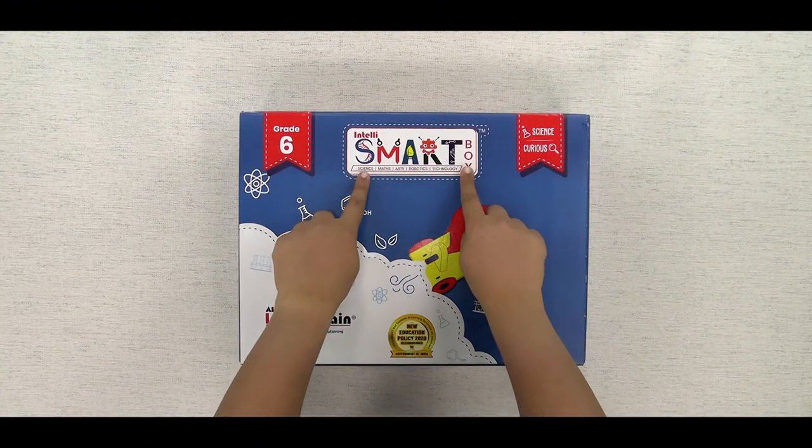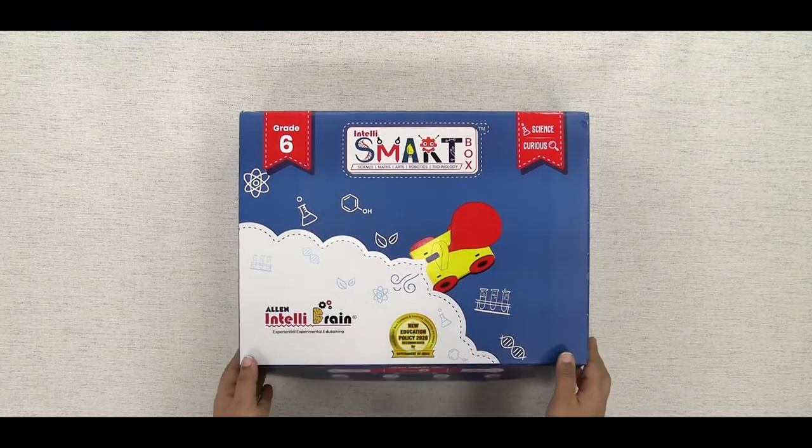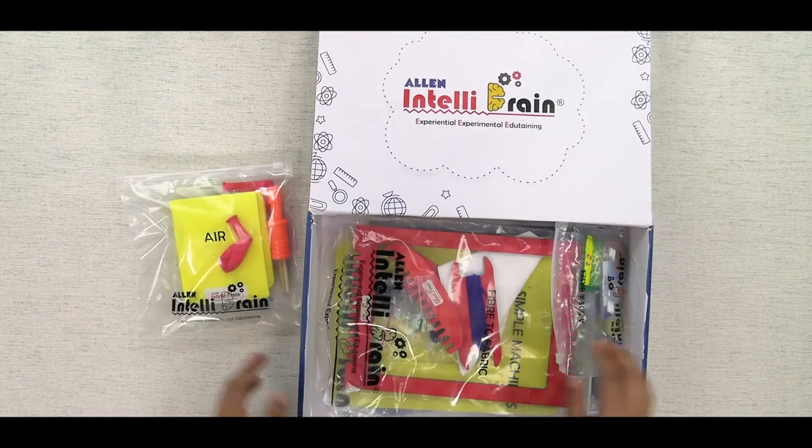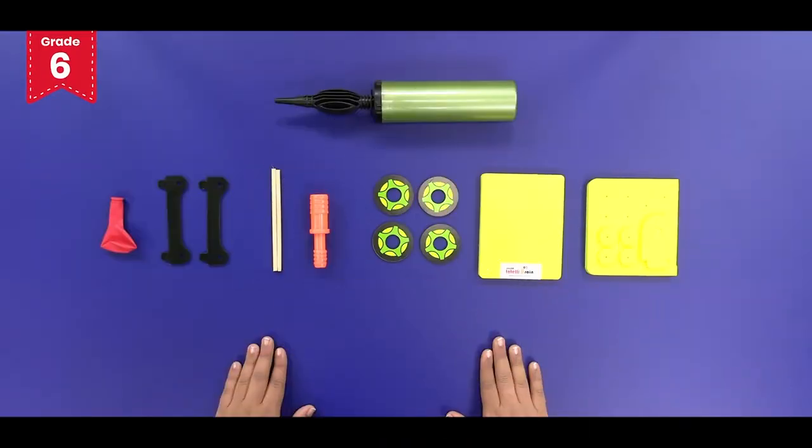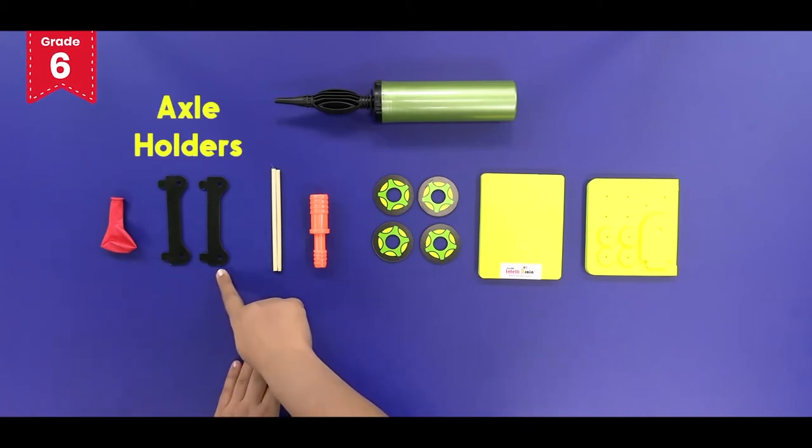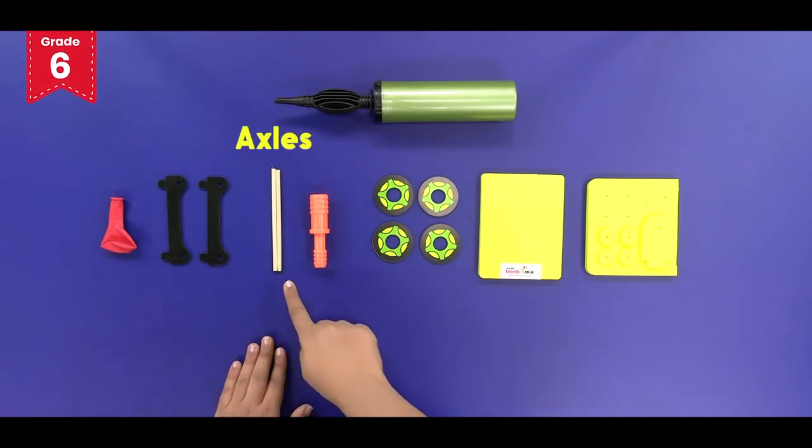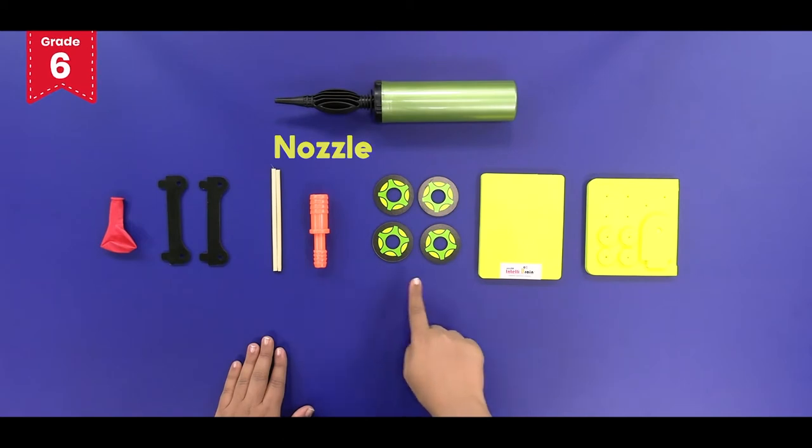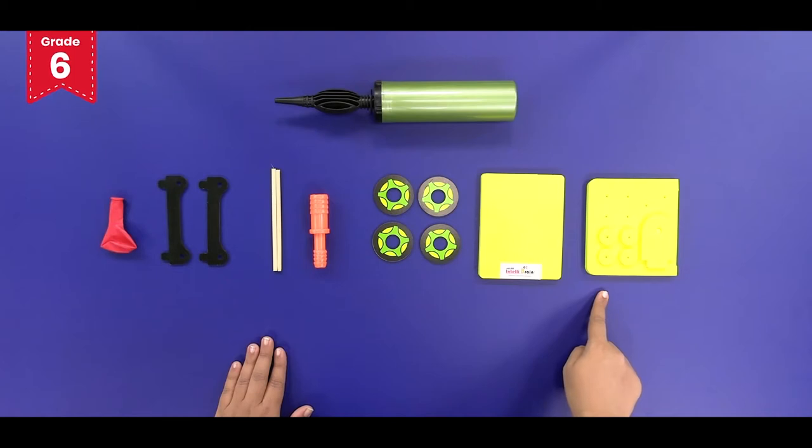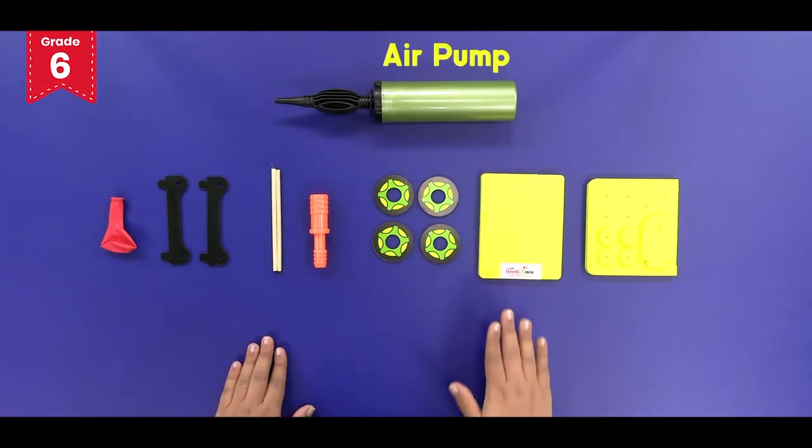From the IntelliSmart box take out the air activity kit. Take out the balloon, axle holders, axles, nozzle, wheels, foam base and another foam sheet containing the nozzle holder and the foam washers from the kit. You might also need an air pump to inflate the balloon.